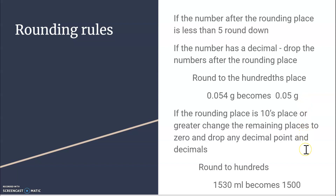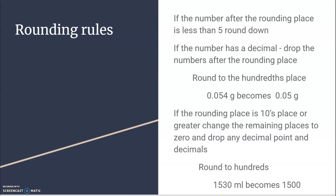But what if the rounding place is in the tens place or higher? Then I change the remaining places to zero and drop any decimal points and decimals if there are any. So if I have to round 1530 milliliters to the hundreds place, what's after the hundreds place — the five — is a number less than five. I can't just drop it; I have to put zeros in their place. So 1530 becomes 1500.